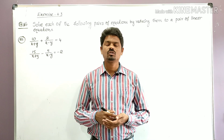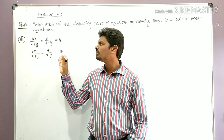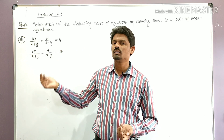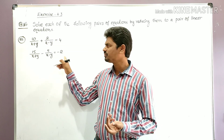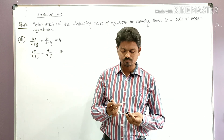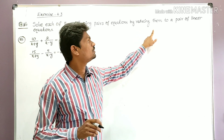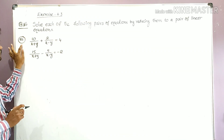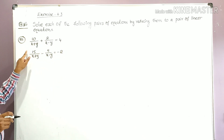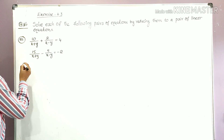This type of question is 4 marks and very important. In previous videos we solved six problems. This is the 7th problem — there are 8 problems total in Exercise 4.3. The problem says: solve each of the following pairs of equations by reducing them to a pair of linear equations. The 7th problem is: 10/(x+y) + 2/(x−y) = 4, and 15/(x+y) − 5/(x−y) = −2.